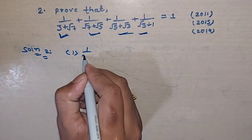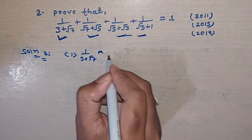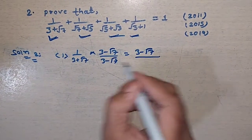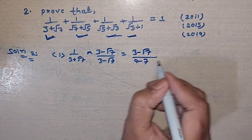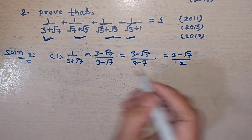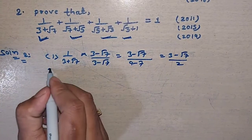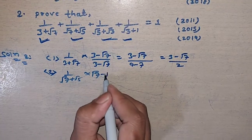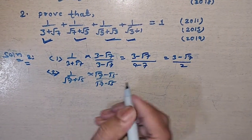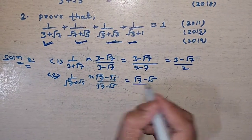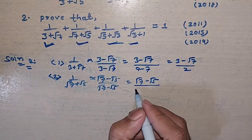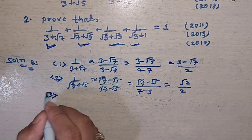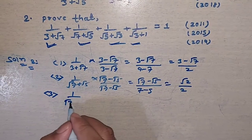The first term is 1/(3 + √7). Multiply by (3 - √7)/(3 - √7). Using (a+b)(a-b), the denominator becomes 9 - 7 = 2, so it equals (3 - √7)/2. The second term is 1/(√7 + √5). Multiply by (√7 - √5)/(√7 - √5). The denominator becomes 7 - 5 = 2, so it equals (√7 - √5)/2.